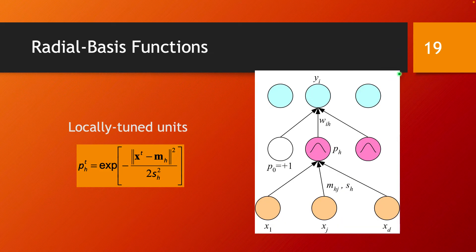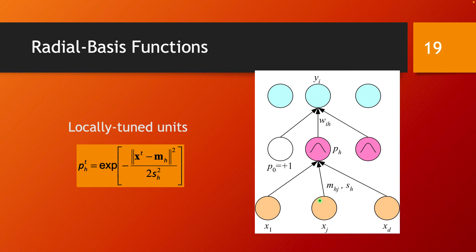In this layered architecture, the input layer has as many units as features in your dataset. There is one layer of hidden units and then an output layer. The hidden units compute the Gaussian-based Radial Basis Function rather than a multiplicative computation as in standard MLPs. For different inputs, only a few hidden units get activated — those most similar to the input data point.